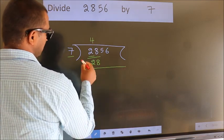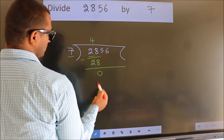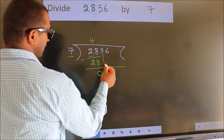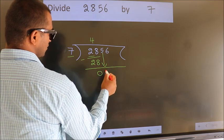Now we should subtract. We get 0. After this, bring down the next number. So 5 down.